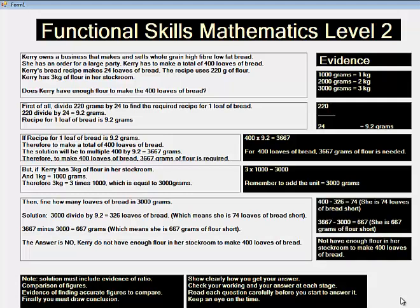Then, find how many loaves of bread in 3,000 grams. Solution: 3,000 divided by 9.2 equals 326 loaves of bread, which means she is 74 loaves of bread short.